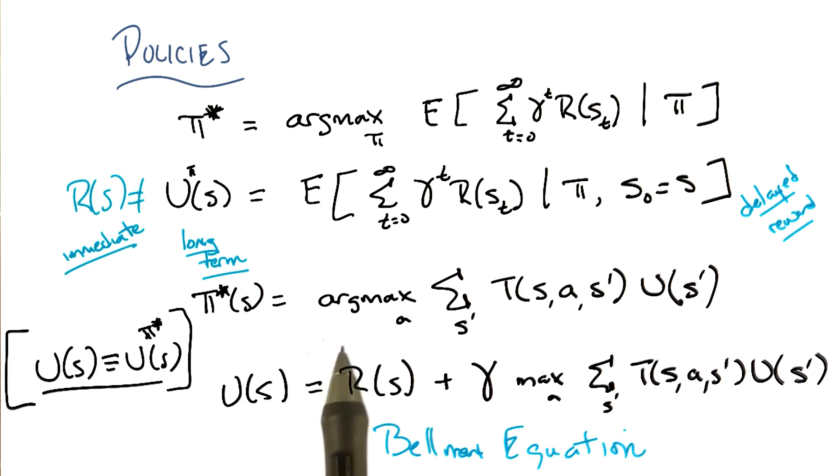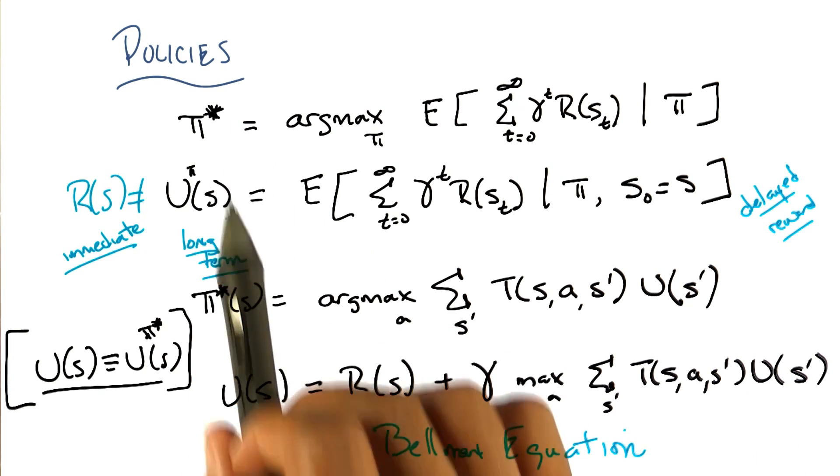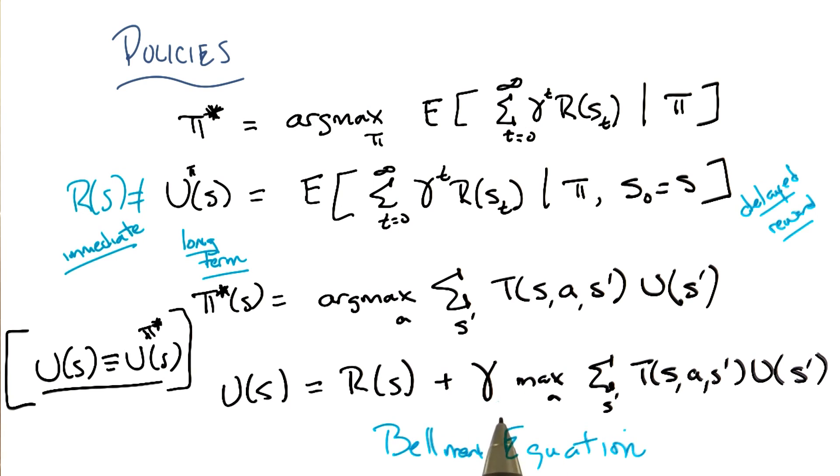The utilities themselves deal with the policy that we want to have. The gamma's our discount, and all the rewards are here. The transition matrix is here, and the actions are all the actions we're going to take. So basically, the whole MDP is referenced inside of here